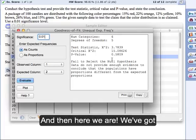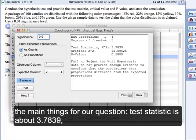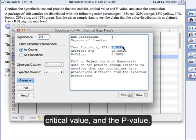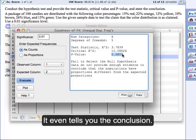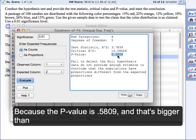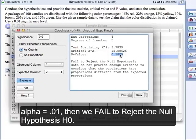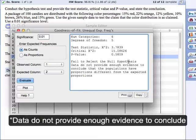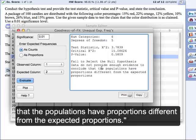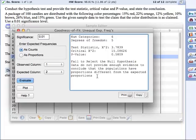So we've got the main things that we're going to plug in for our question. We've got the test statistic is about 3.7839. We've got the critical value, and we've got the p-value. That's the big thing. And then it even tells you the conclusion. Because the p-value is 0.5809, and that's bigger than alpha of 0.01, then we fail to reject the null hypothesis. Data do not provide enough evidence to conclude the populations have proportions different from the expected proportions.